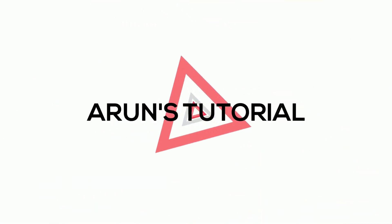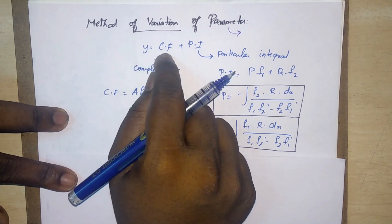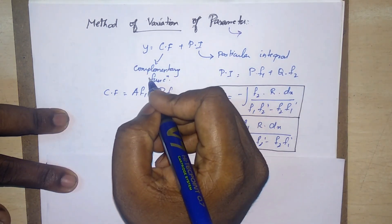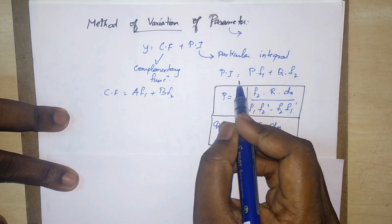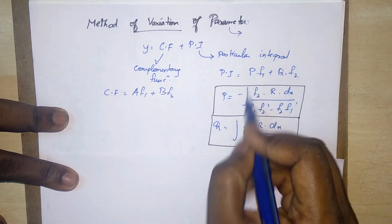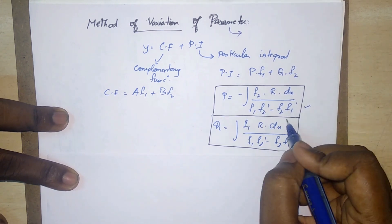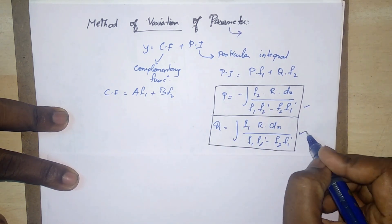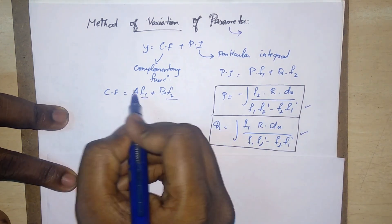What is the method of variation of parameters? The general solution is y = CF + PI, where CF is the complementary function. The particular integral PI is equal to p times f1 plus q times f2. Here, p is equal to the integral of f2·r divided by (f1·f2' minus f2·f1'). f1 and f2 are the complementary functions, excluding the constants.